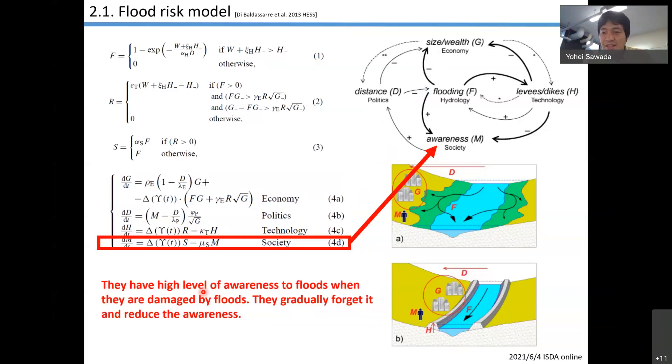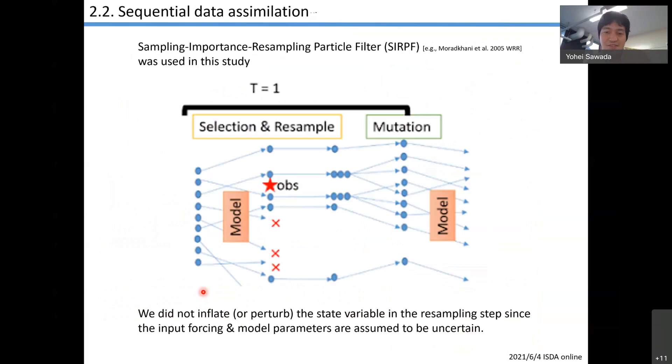I simply applied the particle filter to this model. My work is really simple. I applied vanilla particle filter to the flood risk model. I don't have to explain the details of particle filter. But the point is, one of the uniqueness of our method is that we did not inflate or perturb the state variable. Because our input forcing and model parameters are significantly perturbed, we can maintain the diversity of particles without perturbing the state variable itself. We can avoid filter degeneracy by perturbing only the input and model parameters.